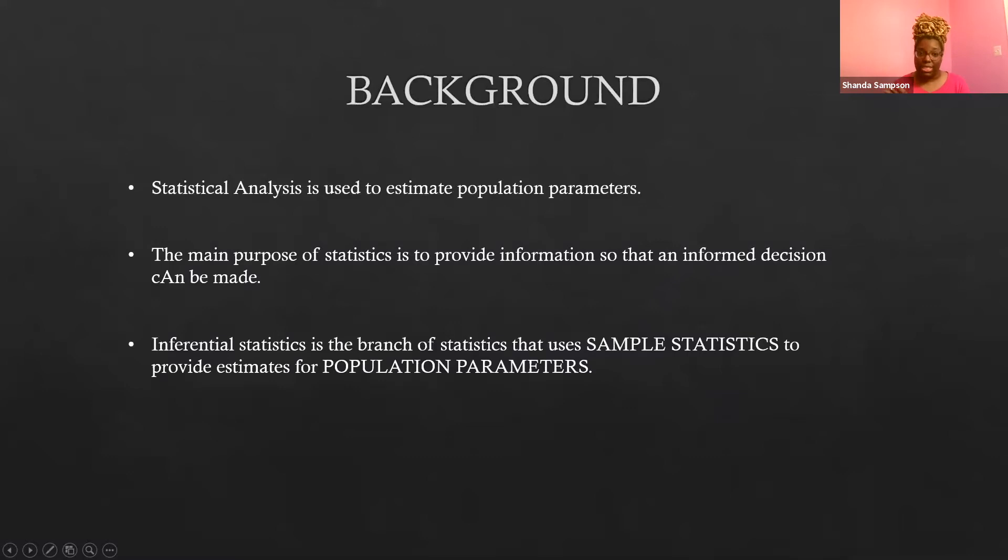And if we remember, inferential statistics is the branch of statistics that uses sample statistics to provide estimates for population parameters. In your first introduction with all of your definitions in statistics, you learned that samples go with statistics and parameters go with population. So inferential statistics talks about the sample statistics that we get. We use that sample to make an estimate on the population parameters with some type of certainty.